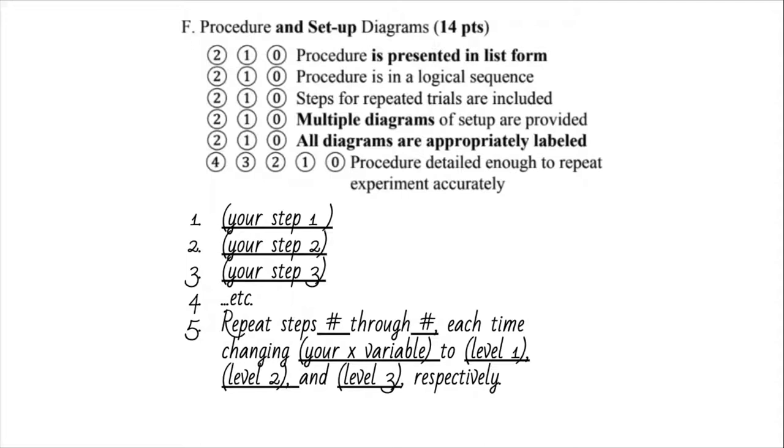Also include your different trials where you're changing the X value each time. One thing you especially need to mention is repeating steps, for example steps one through three, each time changing your X variable to level one, two, and three respectively to show that this is what you exactly did.